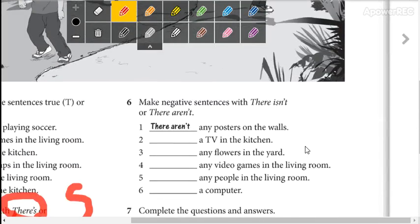Now here, in part number 6, we are going to make negative sentences with there isn't or there aren't.